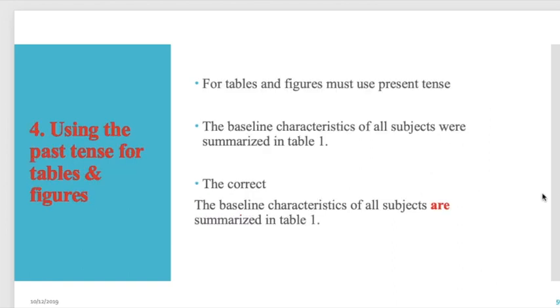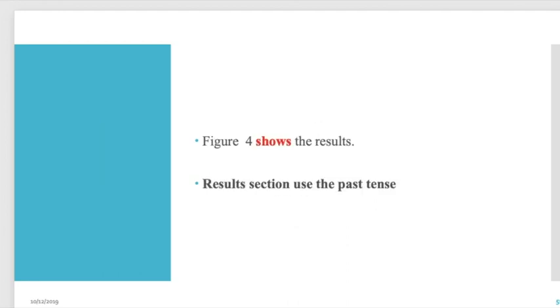Number four is using the past tense for tables and figures. For tables and figures, we must use present tense. For example: 'The baseline characteristics of all subjects were summarized in Table 1.' The correct form is: 'The baseline characteristics of all subjects are summarized in Table 1.' Figure 4 shows the result. In the results section of the manuscript, we can use past tense, but for figures and tables, we should use present tense.